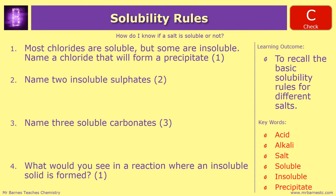Okay, hopefully you've had a go - let's see how you've done. Number one: most chlorides are soluble but some are insoluble - name one chloride that will form a precipitate. There are two you could have put, which are silver chloride and lead chloride.